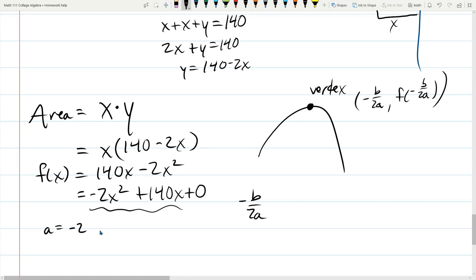A is negative 2. B is positive 140. C is zero. So our negative B over 2A is negative 140 over 2 times negative 2. So the negatives cancel. It's 140 over 4. So we can go 140 cut in half is 70. Cut that in half again, we have 35.